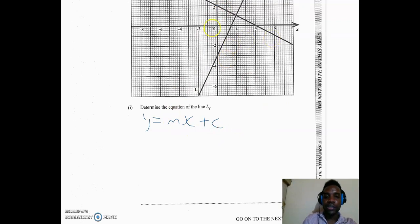We could determine the gradient from looking at the graph by counting, or we can actually work out the gradient based on the points that we're given here. So for line 1, we got 2 points. We got 4, 0 and we also got 0, 2. Now, as we know it, the gradient m is equal to y2 minus y1 over x2 minus x1.